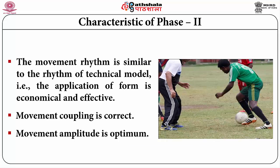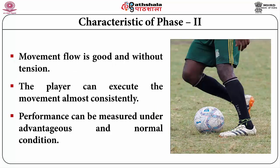The characteristics of consolidation phase two are: the movement rhythm is similar to the rhythm of the technical model, application of force is economical and effective, movement coupling is correct, movement amplitude is optimum, movement flow is good and without tension, and the player can execute the movement almost consistently. Performance can be mastered under advantageous and normal conditions.